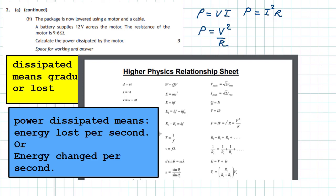We use P = V²/R since we have voltage and resistance. Plugging in the numbers: V² is 12 squared, divided by the resistance 9.6, which gives 15. Power dissipated is measured in joules per second, which is the watt. So the power dissipated by the motor is 15 watts.